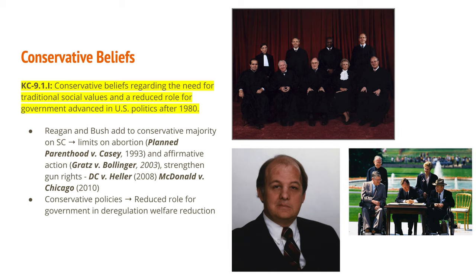The presidents of the 1970s and 1980s — Nixon, Reagan, and Bush — were important to the Supreme Court because they nominated a majority of its justices. Reagan and Bush added to a conservative majority. This more conservative court began putting limits on abortion with Planned Parenthood v. Casey, limited affirmative action, and strengthened gun rights in the 21st century with DC v. Heller and McDonnell v. Chicago in 2010. These conservative policies in the judicial branch led to a reduced role for government, deregulation of businesses, and reductions in welfare benefits like Medicaid.